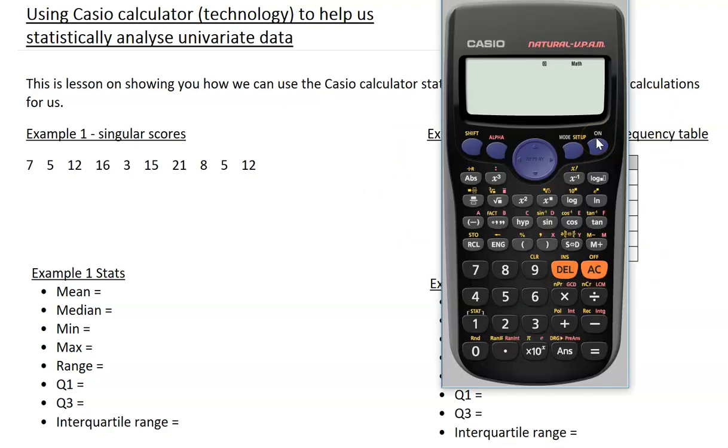Focusing on that first example for a set of singular scores, if we go to mode and select 2 stat, and we're interested in univariate or singular sets of data, so we select option 1. And then we just enter in our data. It doesn't need to be in order.